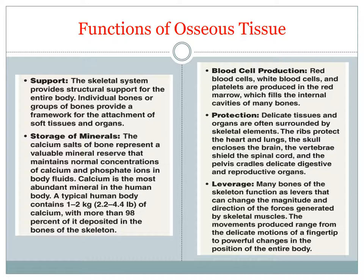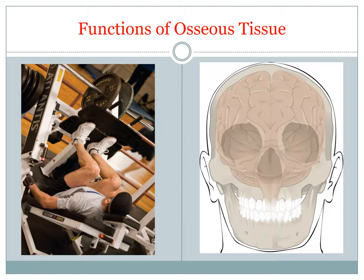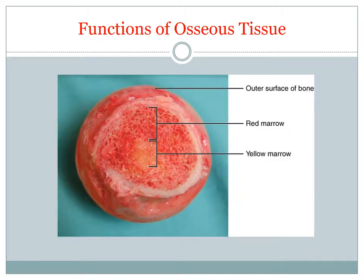Finally, the skeletal system provides blood cell production, also known as hematopoiesis. Red blood cells, white blood cells, and platelets are produced in the red bone marrow, which fills the internal cavities of many bones. Here you can see examples of the various functions that we just discussed. The red bone marrow is shown there, along with some yellow marrow.